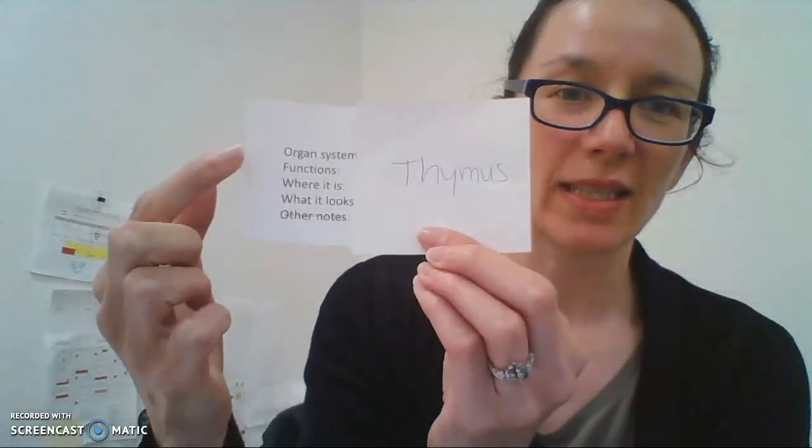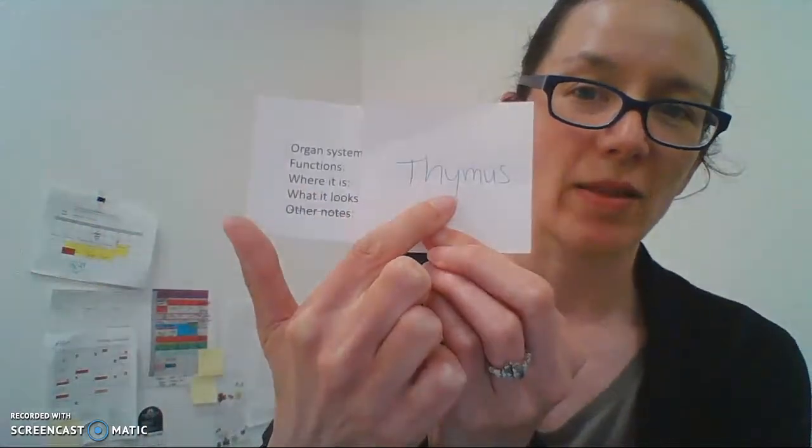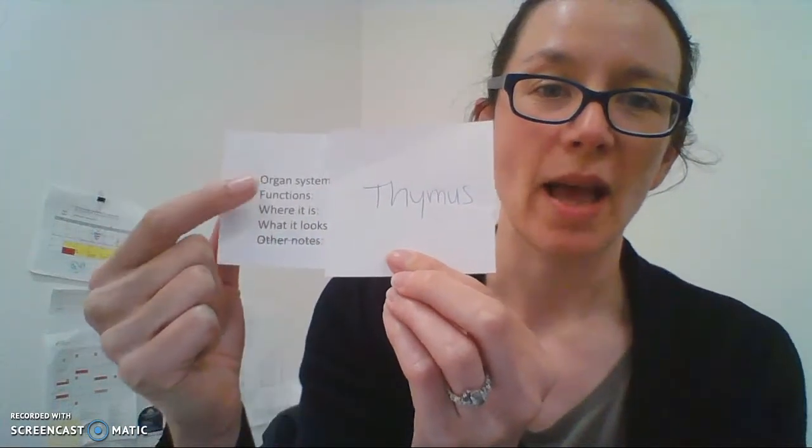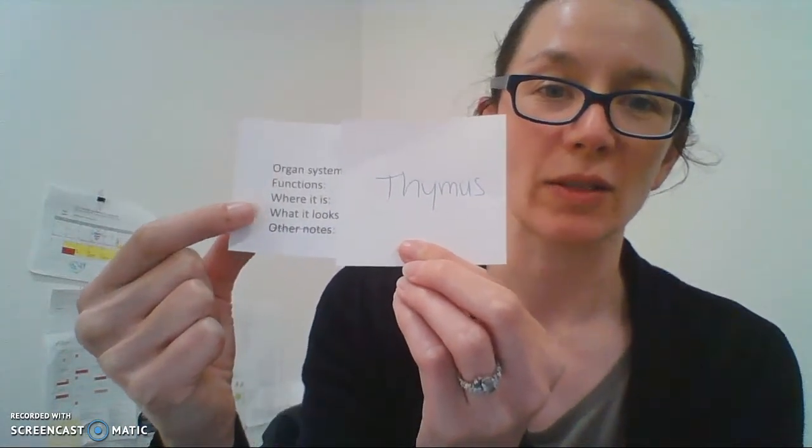When you make the flashcards, you can fold it like this so that you can see these prompts, and then the word goes here. That way, when you see this card, you can think about the thymus and know what kinds of things you should be able to recall.